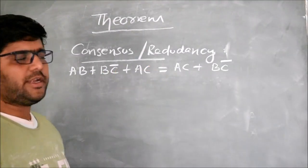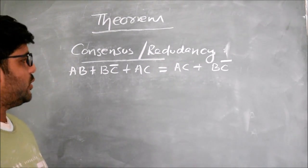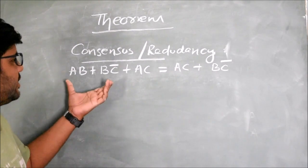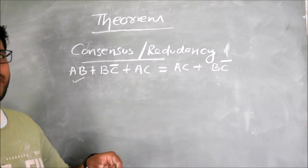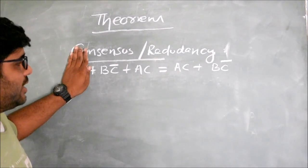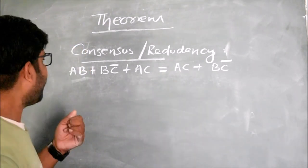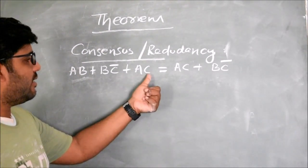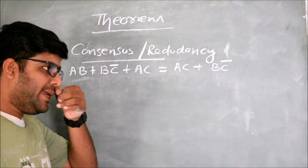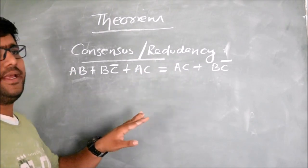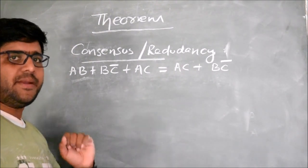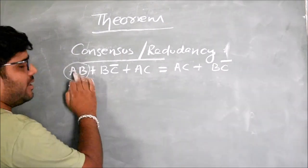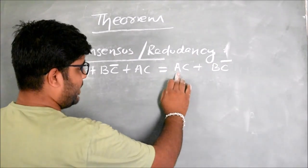The next theorem is the Consensus or Redundancy Theorem. This theorem is used to reduce redundant terms. Here we have three terms: AB, BC̅, and AC. The term AB is actually a redundant term — if you do not use it, the output remains the same. To identify the redundant term: among these three terms, C is available in complemented form in two of the places. That is why AB is the redundancy term and can be eliminated, leaving AC plus BC̅.